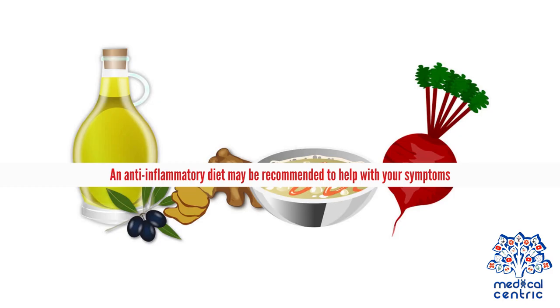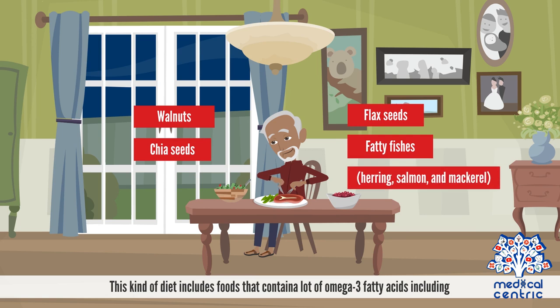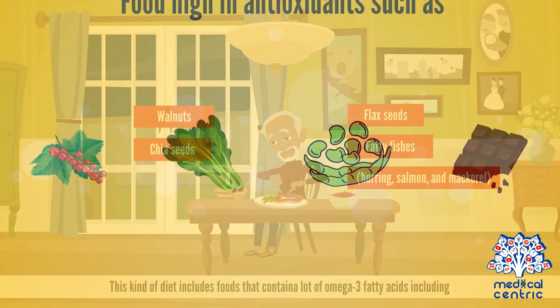An anti-inflammatory diet may be recommended to help with your symptoms. This kind of diet includes foods that contain a lot of omega-3 fatty acids, including walnuts, chia seeds, flax seeds, and fatty fishes such as herring, salmon, and mackerel.